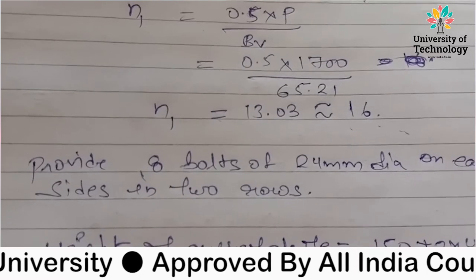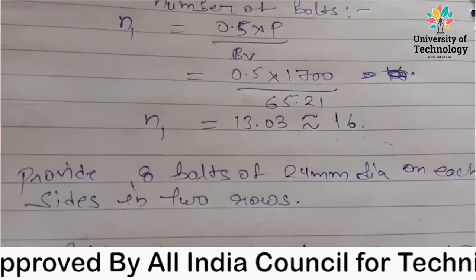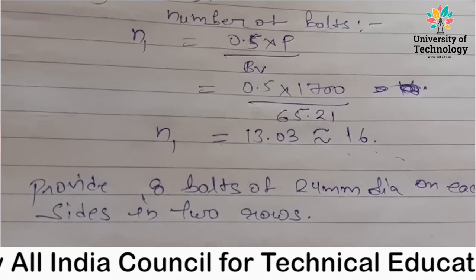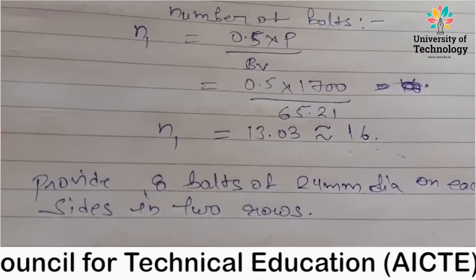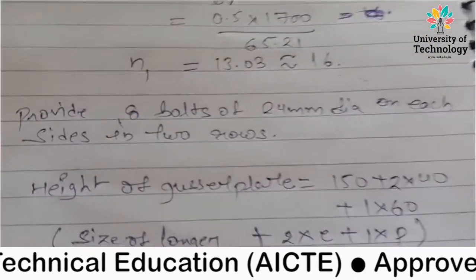Provide 8 bolts of 24 mm diameter on each side in 2 rows. We have 2 sides of gusset plate and 2 sides of angle section. So on 2 sides of the angle is 8-8. So 2 rows will be made, 4-4, 2 rows. That means a chain connection will be made.